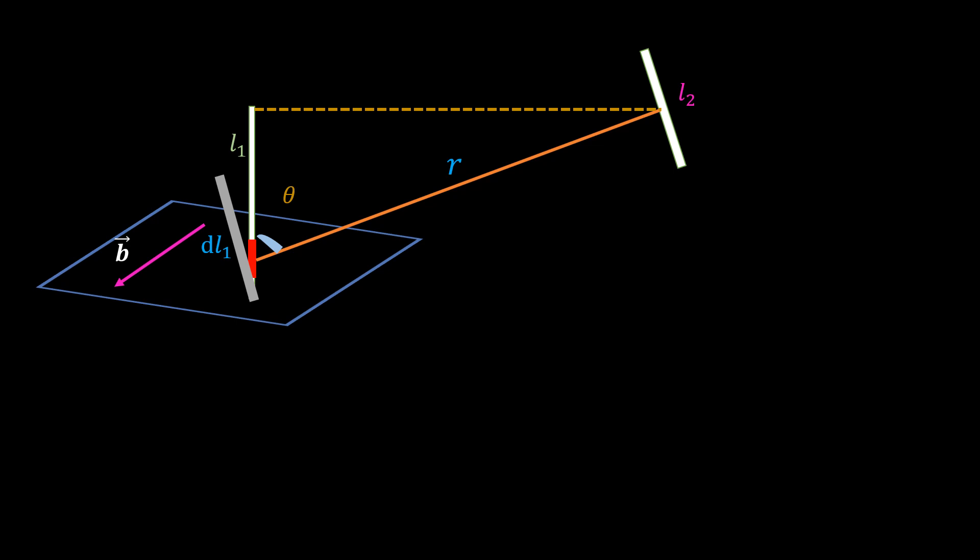So we can resolve the length dL1 like so. Now you can see that it is the component dL1 sin θ that is perpendicular to the second wire and will therefore affect it, while the component dL1 cos θ will not.